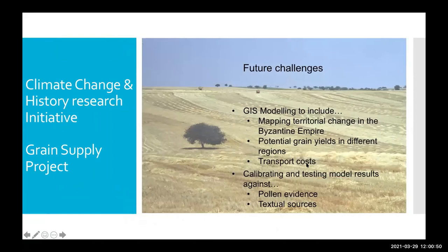Future work will clearly involve GIS, which John mentioned, including a range of different factors including transport costs which we haven't discussed here, and then using the texts and the pollen as a way of calibrating and testing those model results.